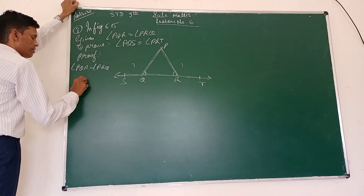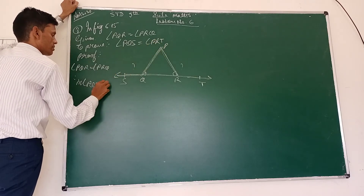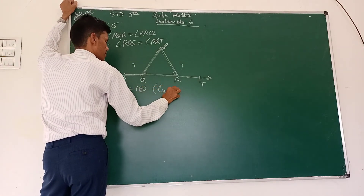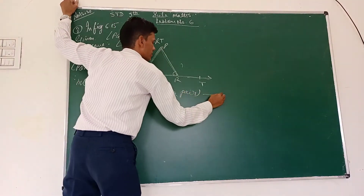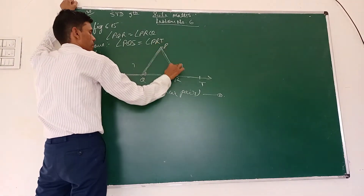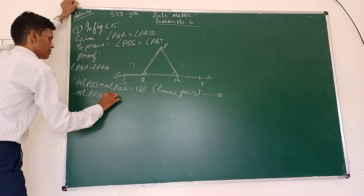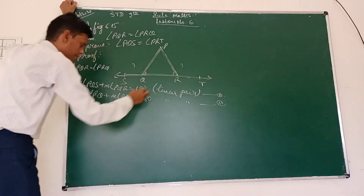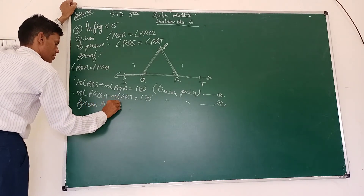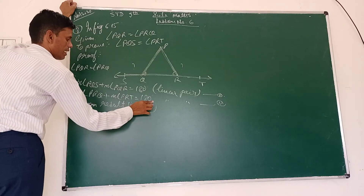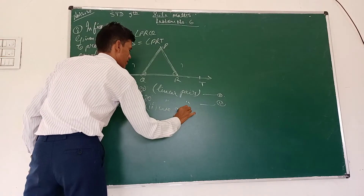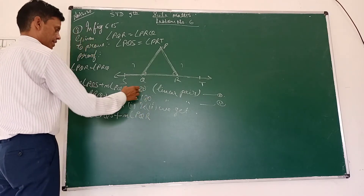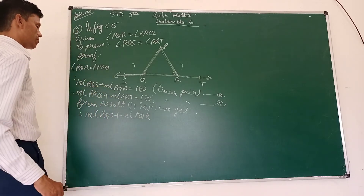Since angle PQS plus angle PQR equals 180 degrees (linear pair) - this is statement one. Also angle PRQ plus angle PRS equals 180 degrees - this is statement two. From statements one and two: angle PQS plus angle PQR equals angle PRQ plus angle PRS, because both equal 180.